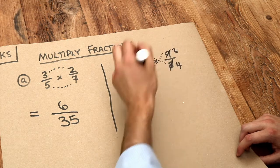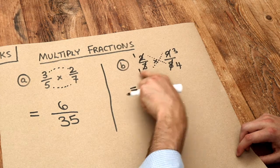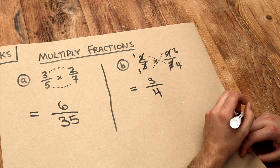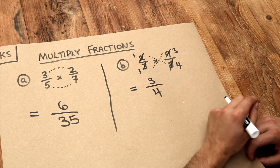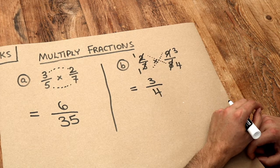So we've got 1 times 3, which is 3, and 1 times 4, which is 4. And by using this method, I don't have any subsequent simplification to do. Thank you.